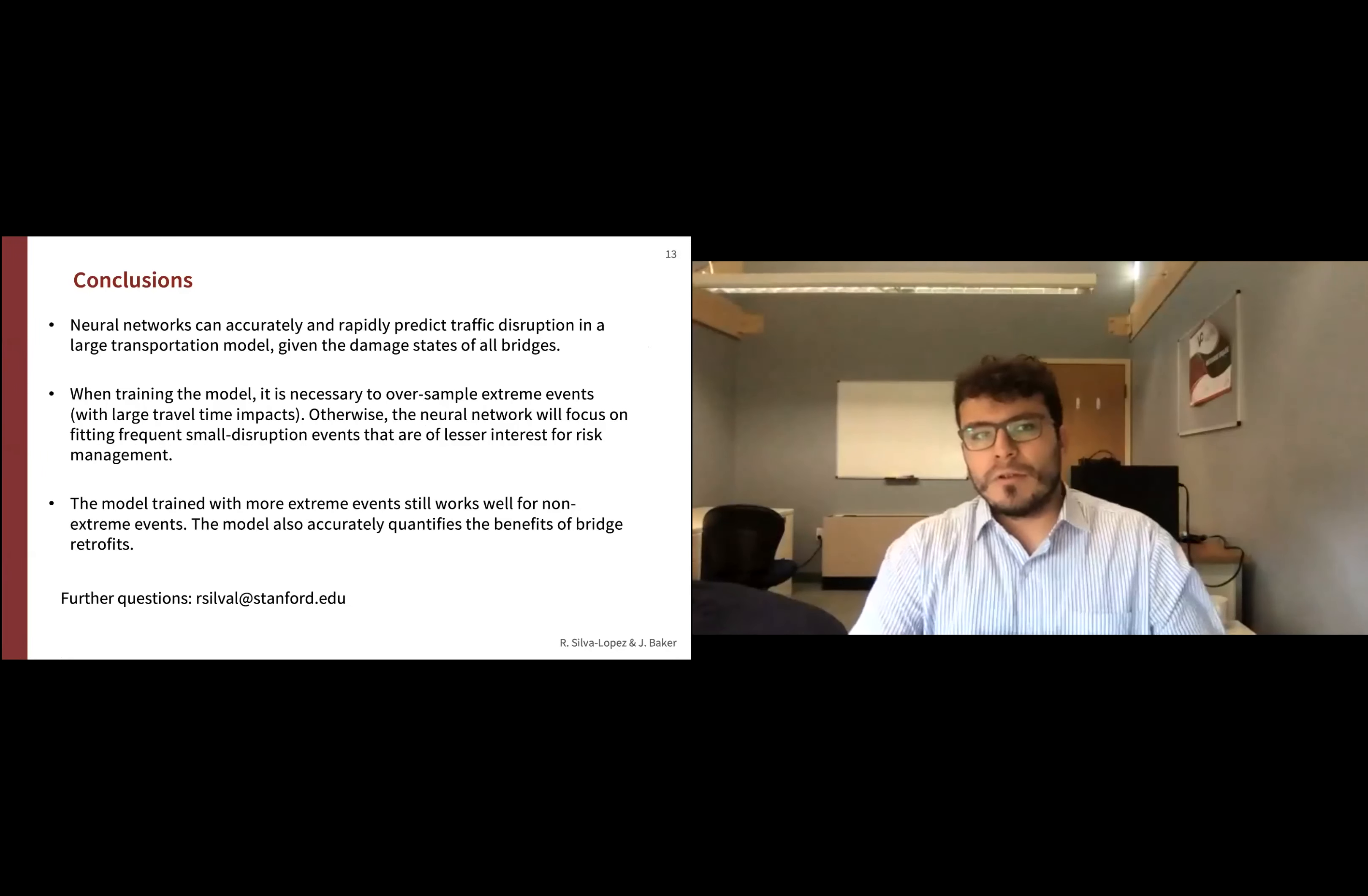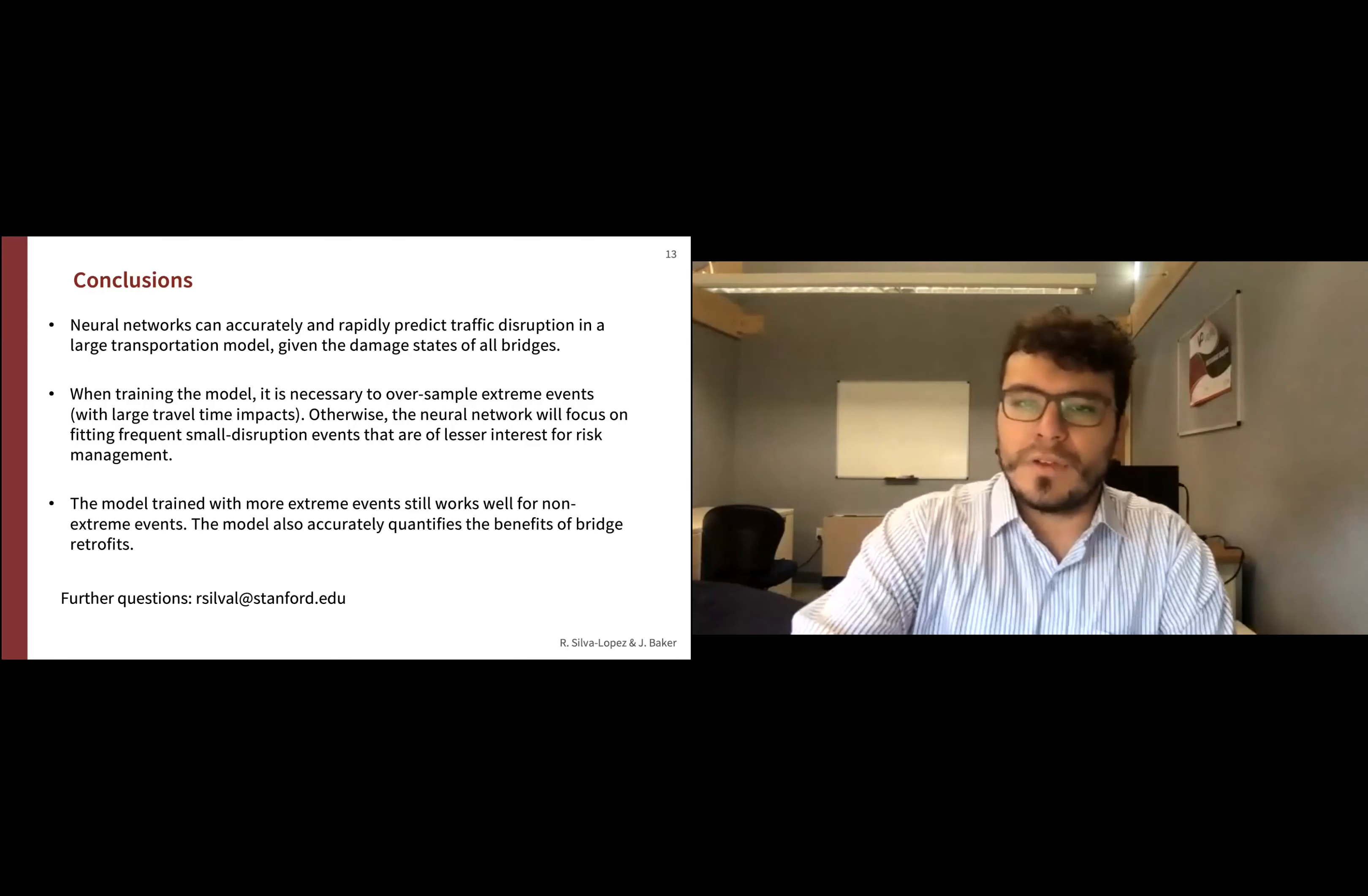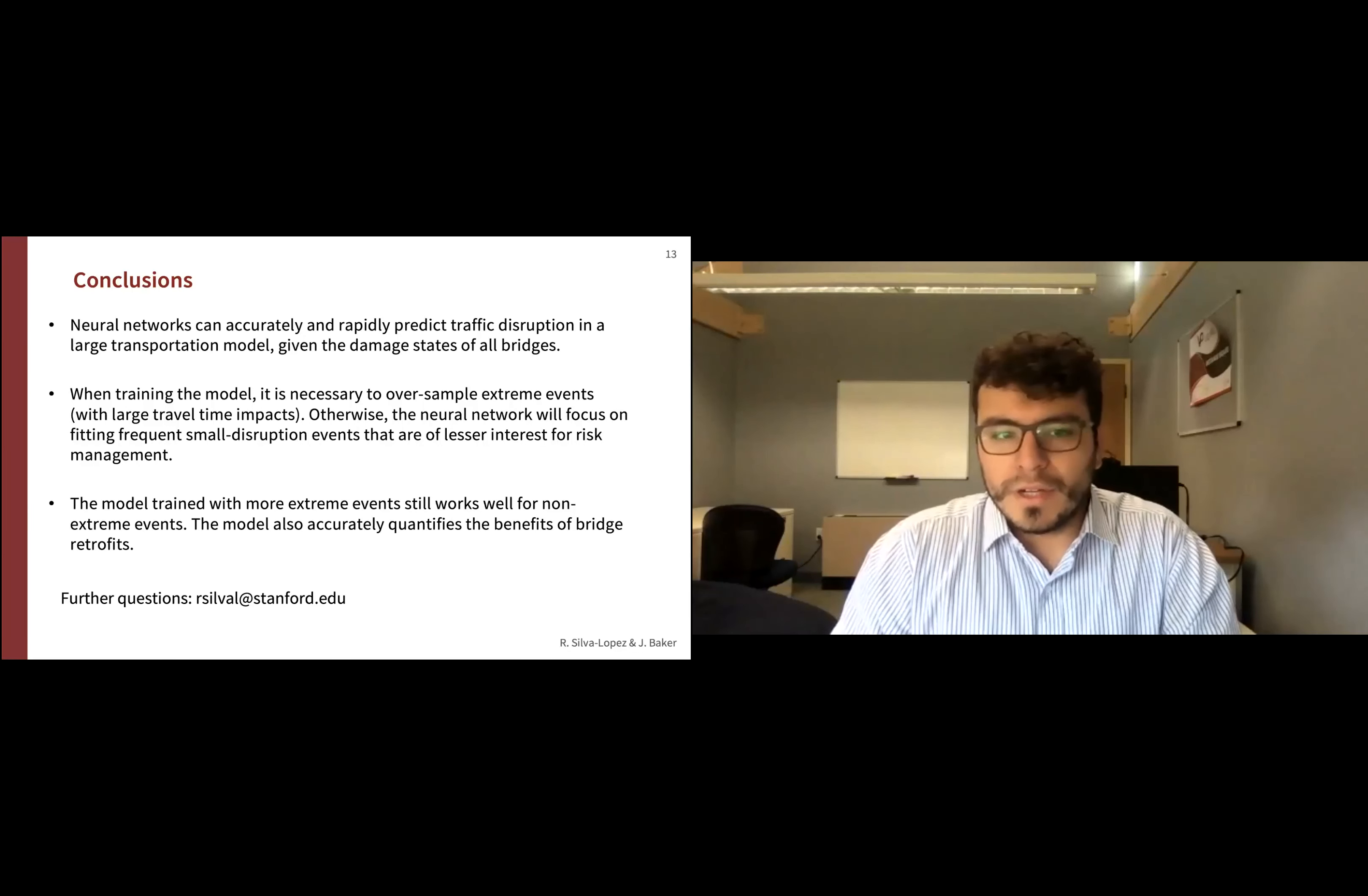As conclusion of my presentation today, the takeaways are that first, neural networks can accurately and rapidly predict traffic disruption in a large and complex transportation model given the damage state of all bridges. The second takeaway is that when training the model, we need to oversample extreme events so we can account for these events properly. Otherwise, the network will focus on fitting small and frequent, small disruption events that have lesser interest for risk management. Finally, even though you're training for extreme events, the performance for non-extreme events is also quite good. More importantly, the spectrum of experiments that this opens, given that it's so fast compared to the previous model, is really incredible.